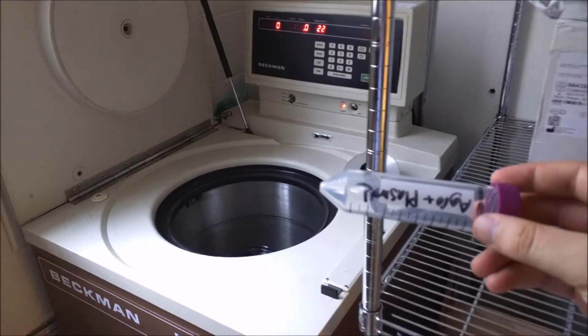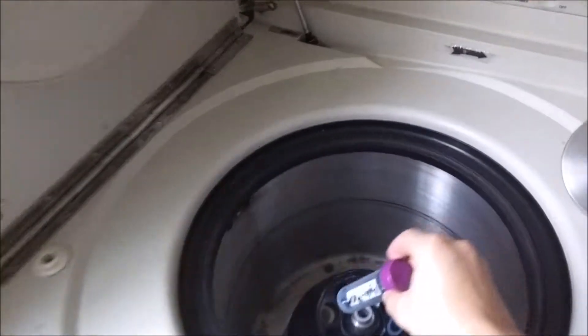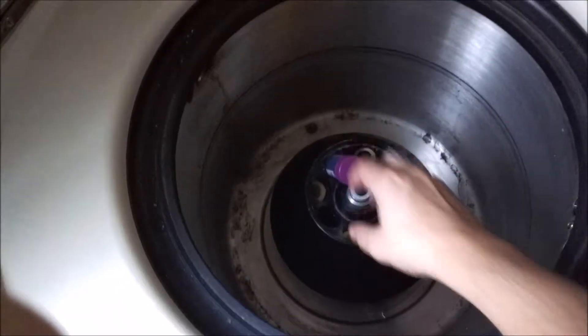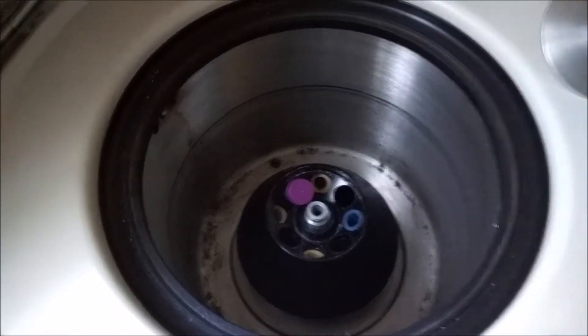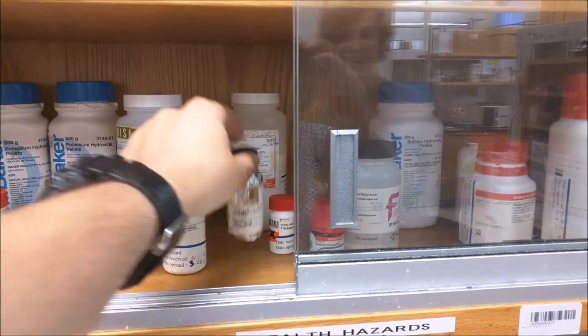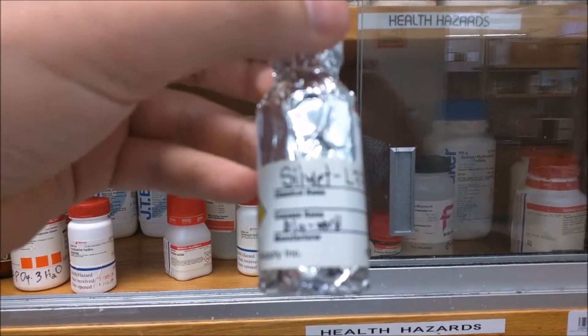We don't want the culture media on our plants, so we pellet the Agro cells in this centrifuge. The cells are resuspended in a solution of sugars and Silwet L-77, a surfactant.